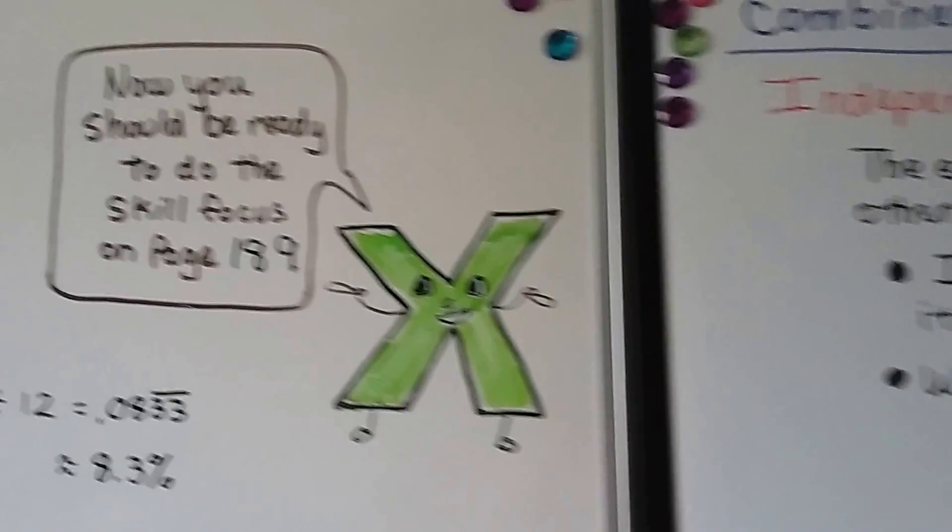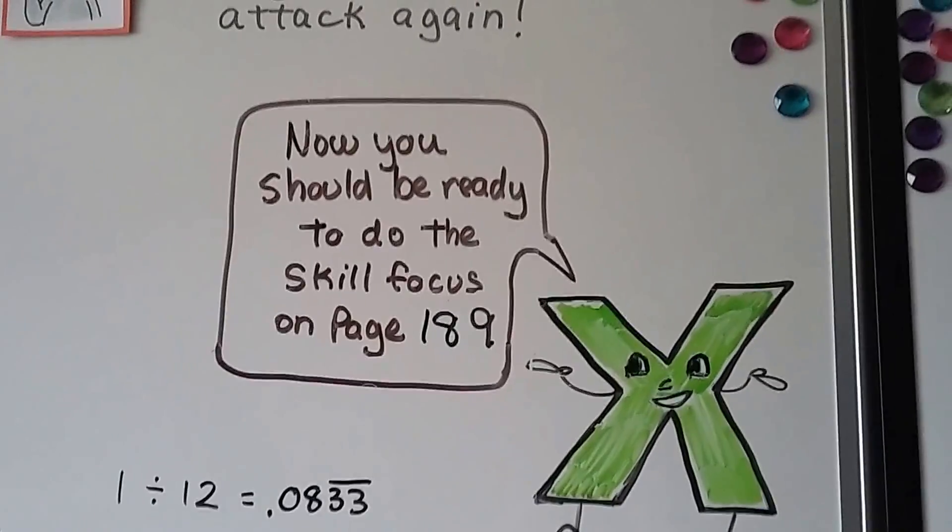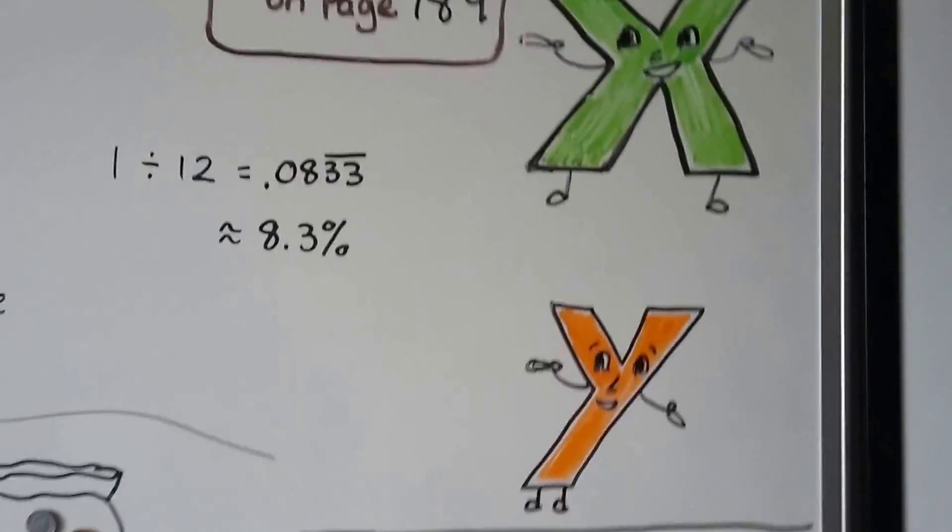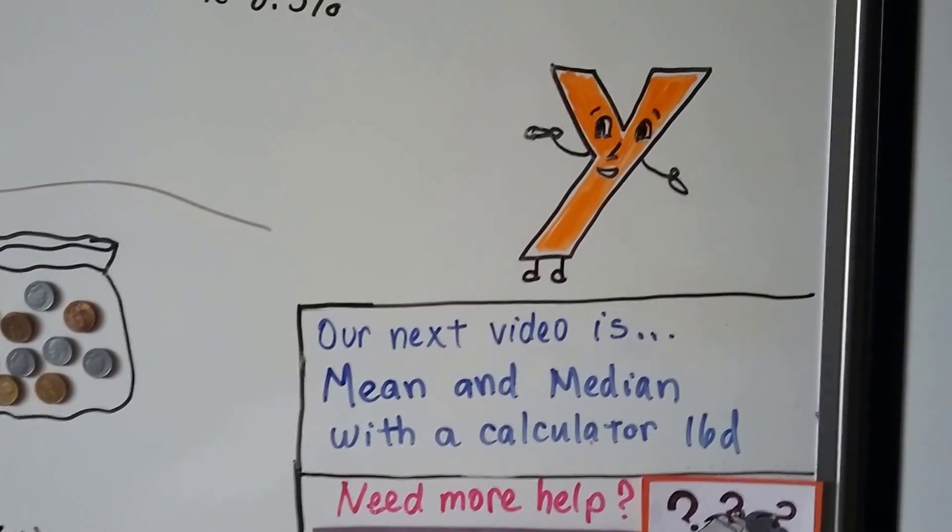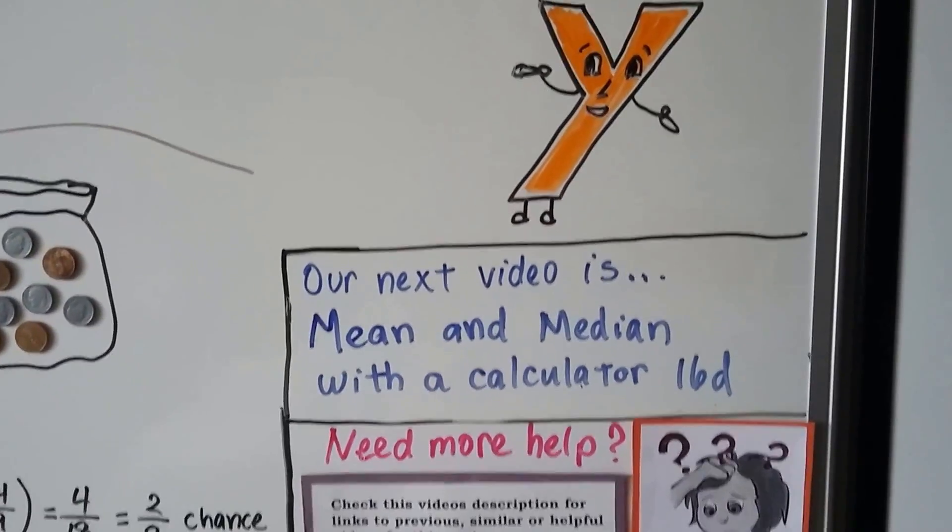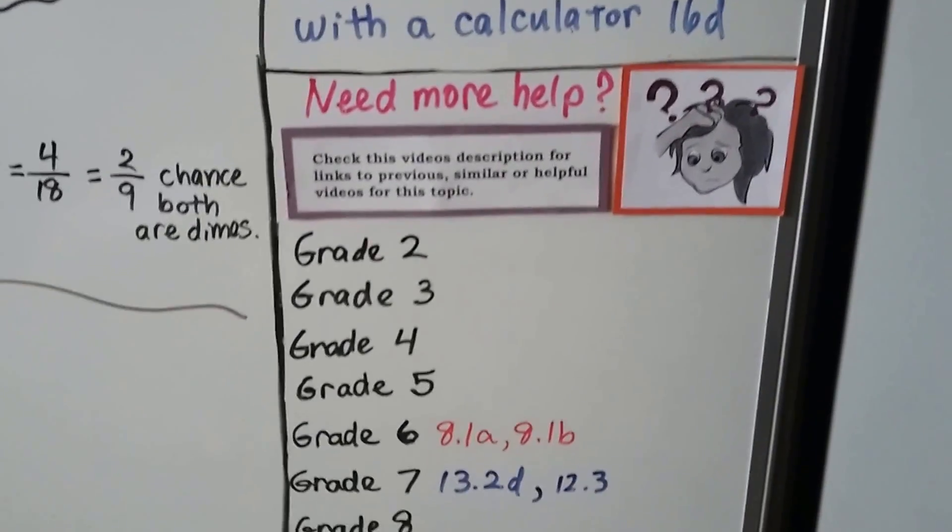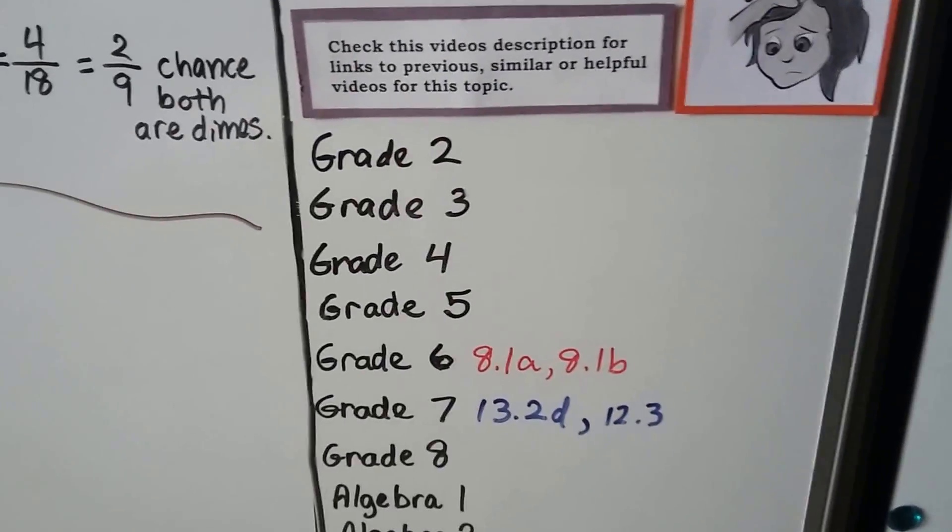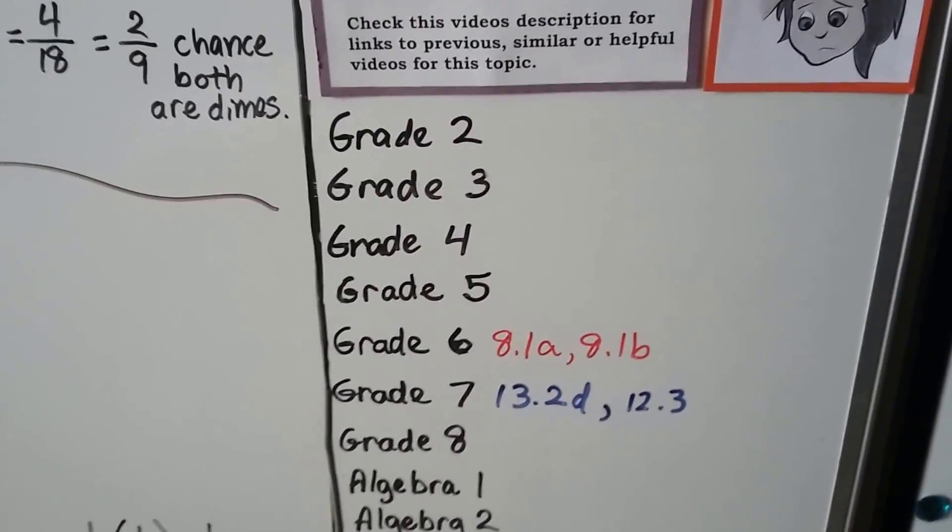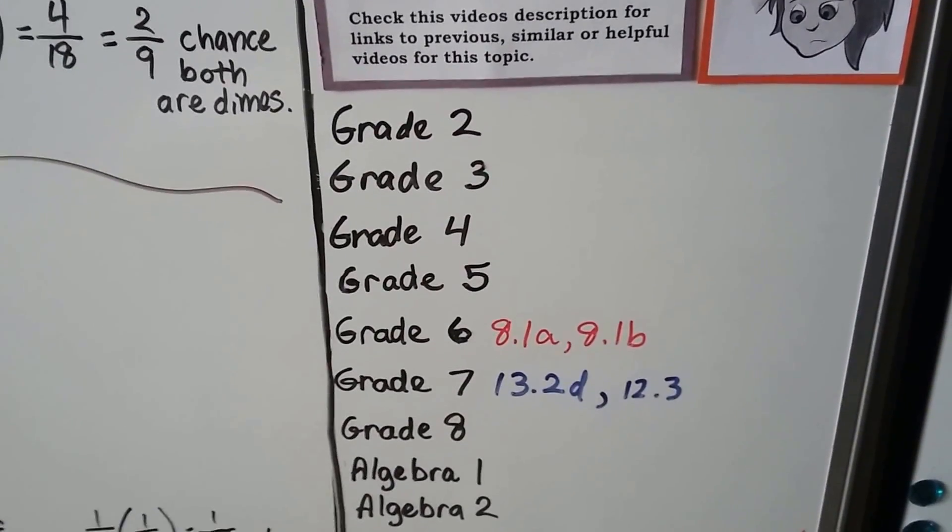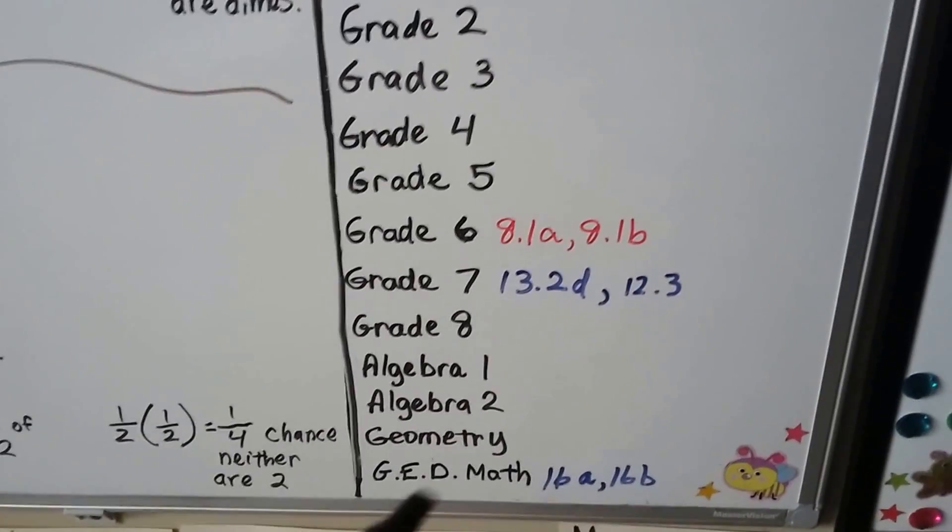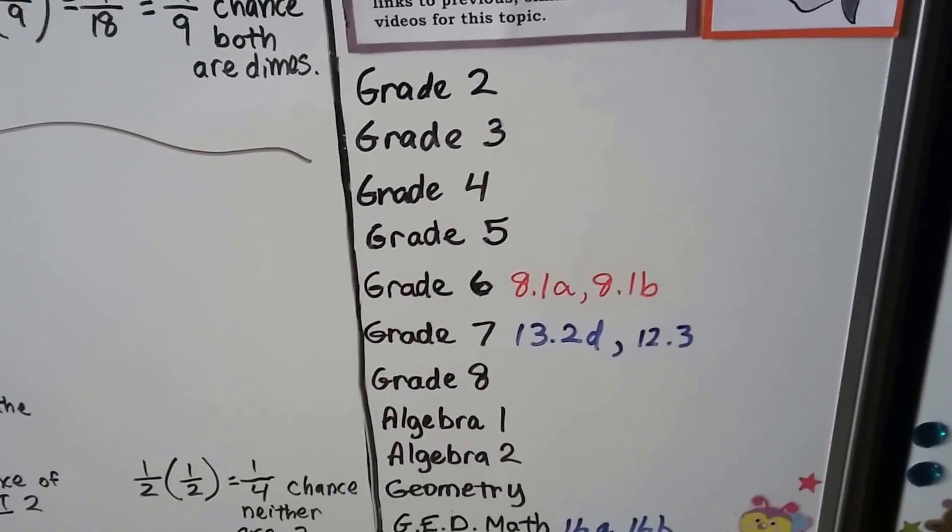So now you should be ready to do the skill focus on page 189. And our next video is going to be about mean and median, but with the calculator they're going to lend you for the test. That's lesson 16D. And I'm going to have links to those middle school videos that go more into this topic that might help you if you're still having trouble. If you try watching this video again and you still don't get it, try watching these.